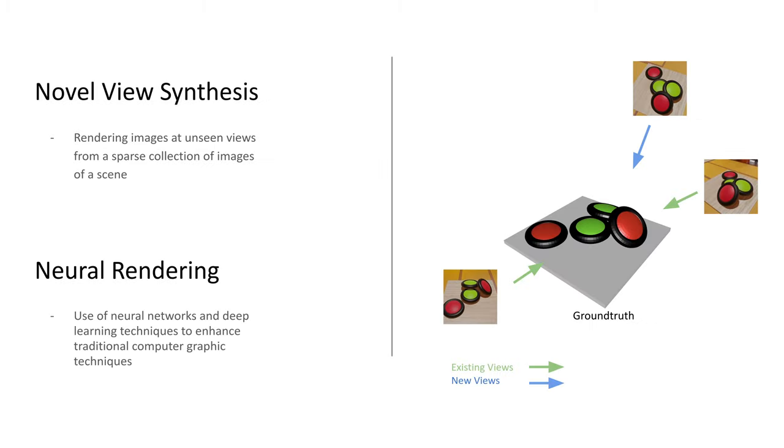Novel view synthesis is the problem of generating images at unseen views from a sparse collection of images of a scene. An example on the diagram on the right can be seen where there are two existing views of the scene, denoted by the green arrow, and the image corresponding to a new view, denoted by the blue arrow, is to be synthesized.